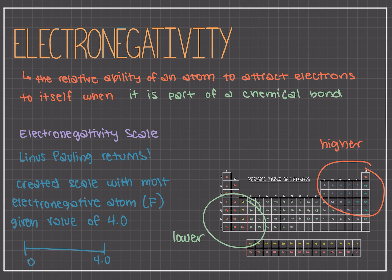Electronegativity of all the other elements are scaled relative to this value. It is important to notice that the elements most important to organic chemistry, which are carbon, nitrogen, and oxygen, have some of the highest electronegativity values on the periodic table as well. Also keep note that the noble gases are excluded because these atoms do not share electrons with other atoms, since they have a full valence shell.